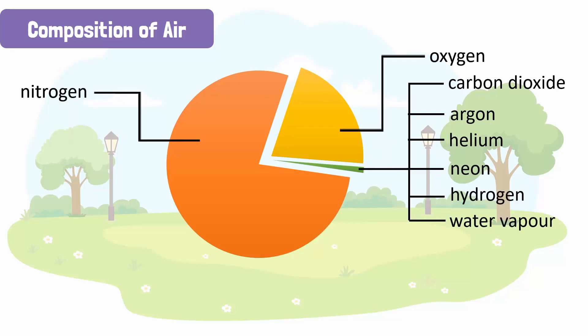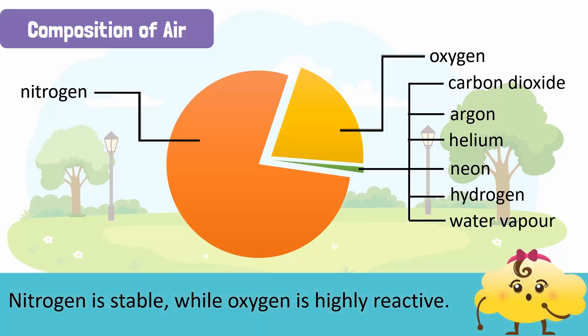Now you know what air is composed of. The reason why nitrogen has the highest concentration in air is because it is stable while oxygen is highly reactive.